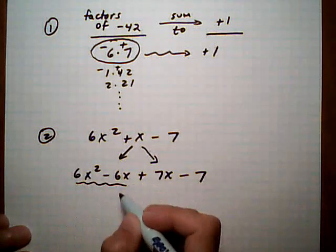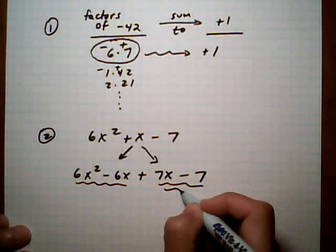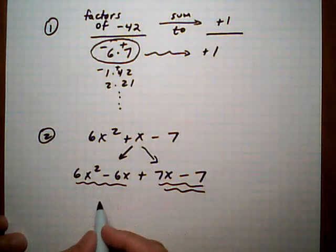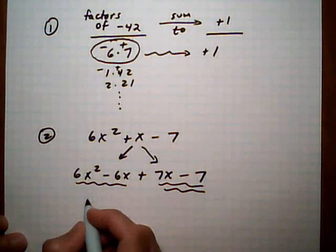And then we factor by grouping. So we group those two together, and group these two together. And from the first two terms, we can pull out a 6x.